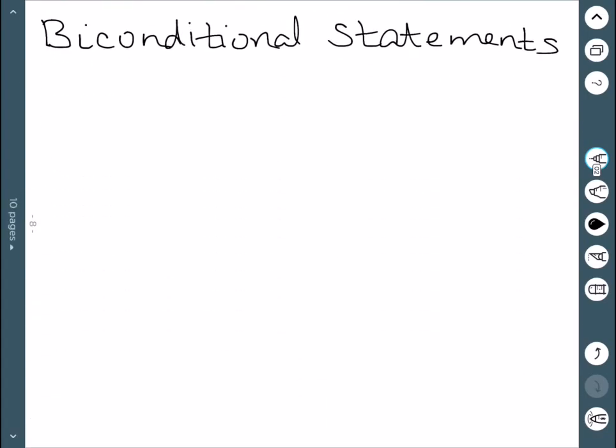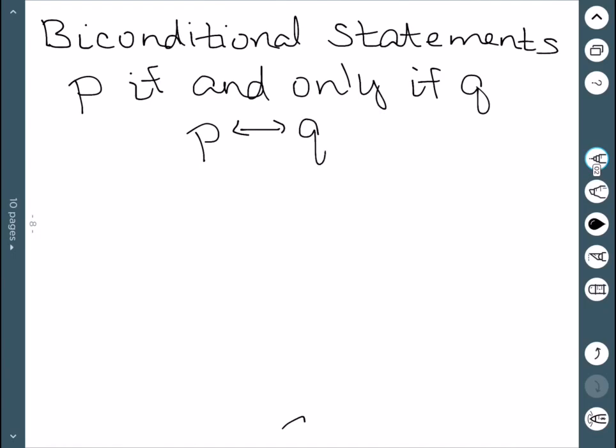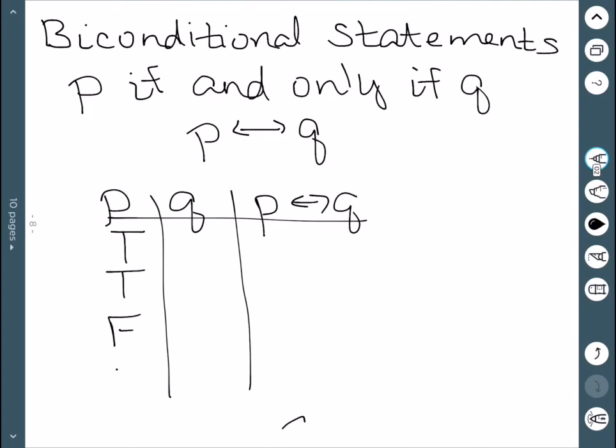Next we'll do biconditional. So these are P if and only if Q, and we denote this by this double arrow. So this is the same thing as saying if P then Q and if Q then P. So it goes both ways. If we do our truth table, there are only two cases where this is true.